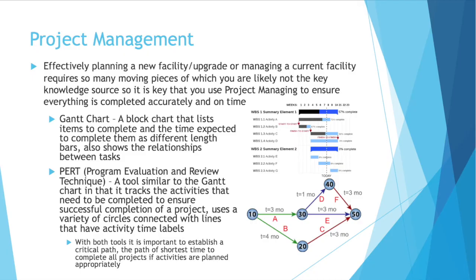Many people prefer a PERT chart. PERT is an acronym that stands for Program Evaluation and Review Technique. It's similar to the Gantt chart because it tracks activities that need to be completed to ensure successful completion of a project, although it uses a variety of circles connected with lines that have activity and time labels. With both your Gantt chart and your PERT chart, what really matters is the critical path — the time it takes to complete all activities. It's important to know how long each activity takes, how they are related sequentially, and what activities can be done in parallel at the same time. If you're not effectively managing a project and doing every activity one after another, something that might only take eight months could easily take three years.